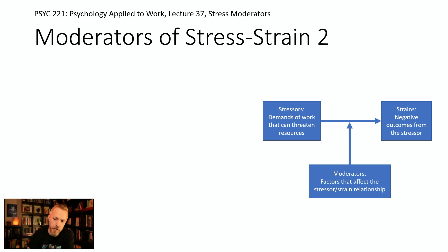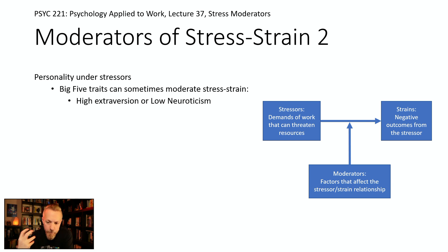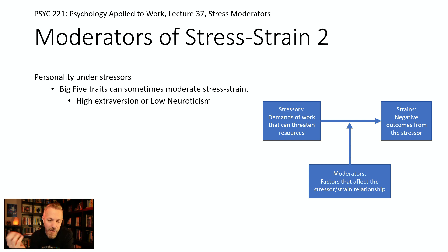Personality is a moderator — specifically individual differences under stress. Elements of the Big Five can have a moderating effect. People high in extraversion are more likely to assert themselves and seek affiliative coping. People low in neuroticism are more emotionally stable and less prone to negative emotion, so they don't feel as negatively impacted by a given stressor.